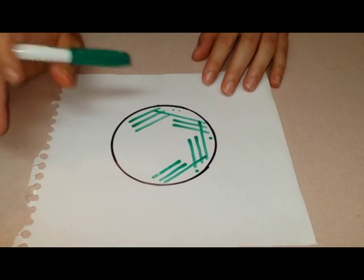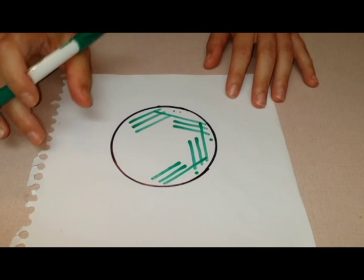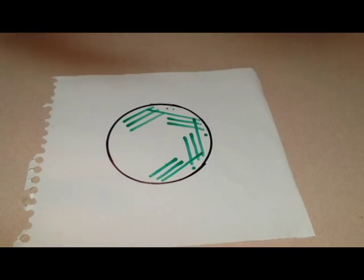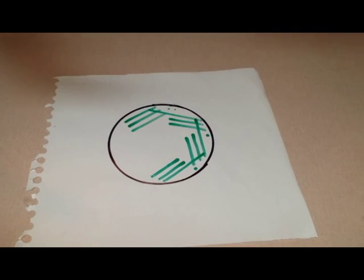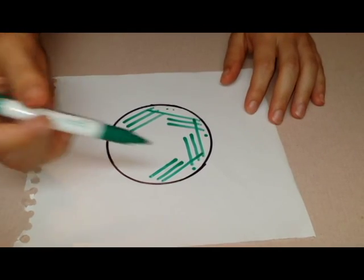And you will definitely get single colonies, these individual little circles coming from one cell clone with this method.